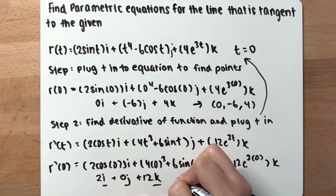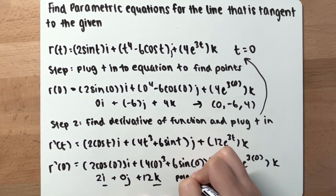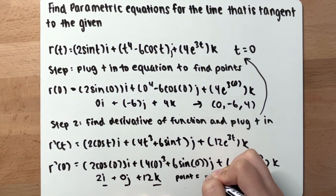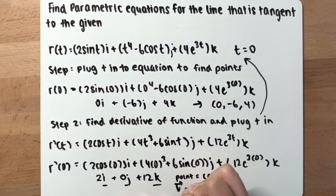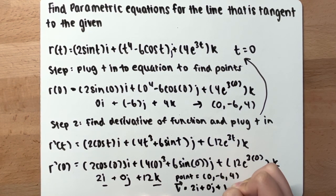Alright, so for your points, you have 0, negative 6, and 4. For a vector, you have 2i plus 0j plus 12k.